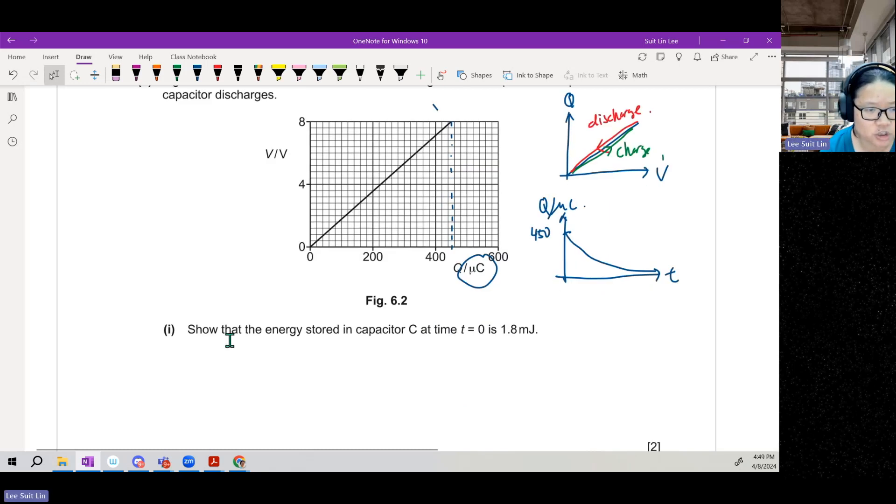Show that the energy stored in the capacitor at t equal to zero is 1.8 millijoules. So t equal to zero is here because we're discharging. So to find energy stored, I have Q, I have V. I'm going to use half QV. So Q would be 450 times 10 to the negative 6, V is 8.